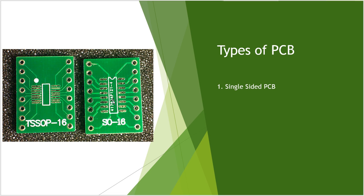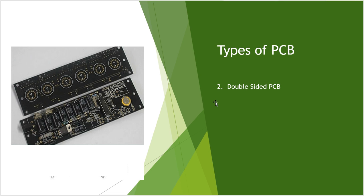So what are the types of PCB? As you can see in the picture, this is a single-sided PCB. We call it single-sided because the traces that you see going across are only on one side of the PCB. If you flip this PCB over, there will be no copper traces on the other side — they are only on one side, which is why we call it a single-sided PCB.